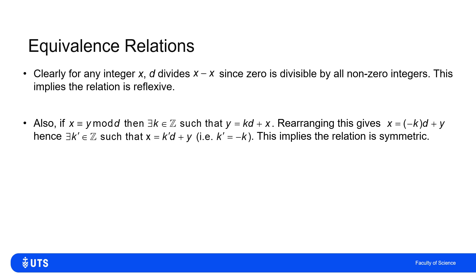What about symmetry? Well, if X is Y mod D, that means that Y can be written as K multiples of D plus X. And if I simply rearrange that, then I can show that X can be written as K dashed multiples of D plus Y, where K dashed is simply minus K. So that would also tell me that if X is congruent to Y mod D, Y is congruent to X mod D. So I have symmetry there.